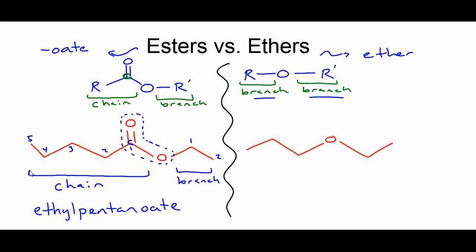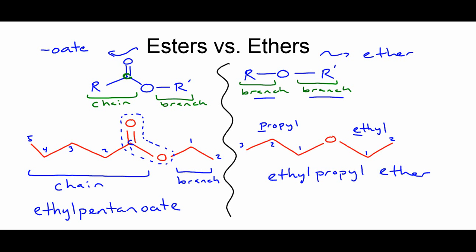For the ether, I have one-two-three carbons on one side and one-two on the other. Since both sides are branches, they both end in '-yl.' Three carbons is propyl, two carbons is ethyl. Alphabetically, ethyl comes before propyl, so this is ethyl propyl ether. If you had two carbons on each side, you'd have two ethyls — diethyl ether. So the key difference: if there's just an O breaking up the chain, it's an ether; if there's also a double-bonded O, it's an ester.